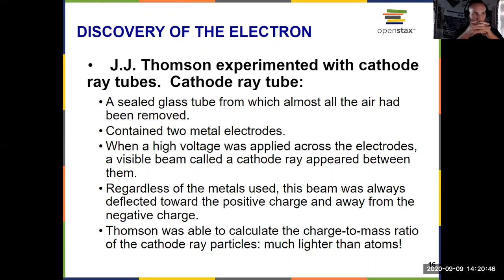Thompson applied a voltage across the electrodes, and then we saw a beam that was called a cathode ray, hence cathode ray tube, between the two electrodes, one positive electrode, one negative electrode. And he used a variety of metals to make these electrodes. Didn't matter what he used, different atoms that were in there, these electrodes, but a beam always went toward the positive charge and away from the negative charge.